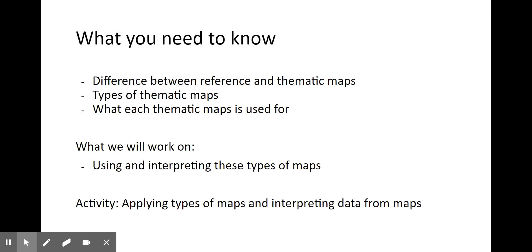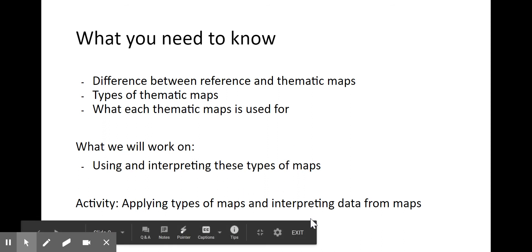What you need to know is the broad difference between reference and thematic maps, what each type of map is meant to do, the five types of thematic maps, and what each thematic map is primarily used for — meaning when would you use one over another. We're going to work on actually using these maps, because it's one thing to know what the types are and another to actually read and interpret them. That is what the next activity is going to focus on: applying what you know about map types and starting to interpret them.